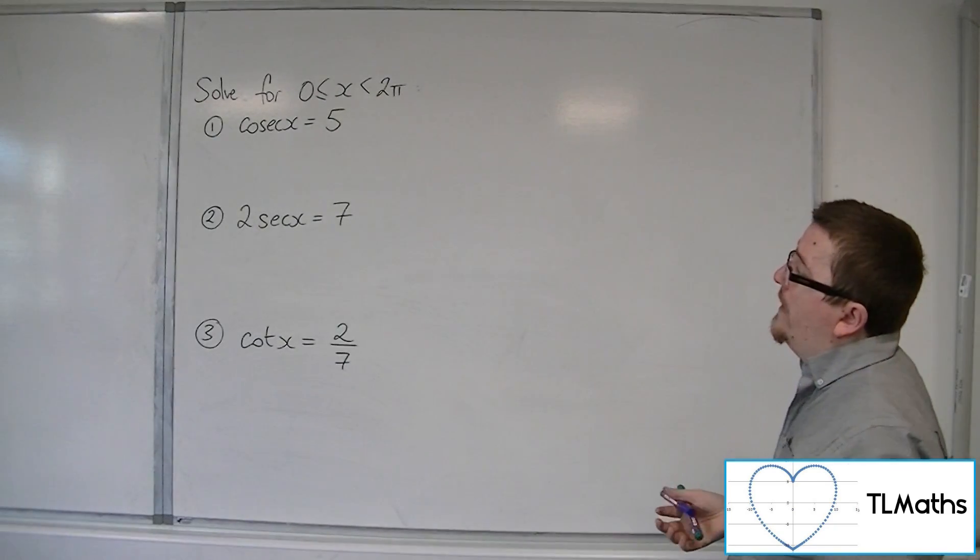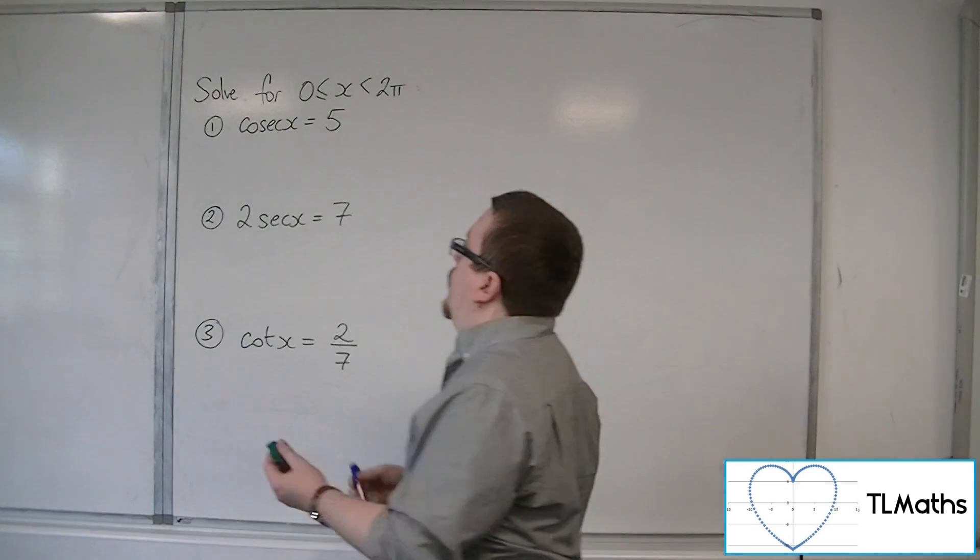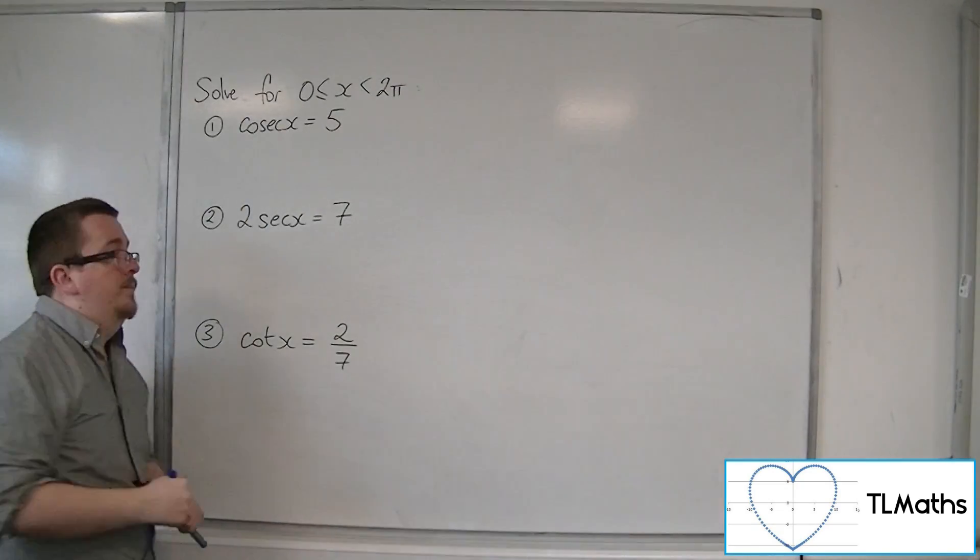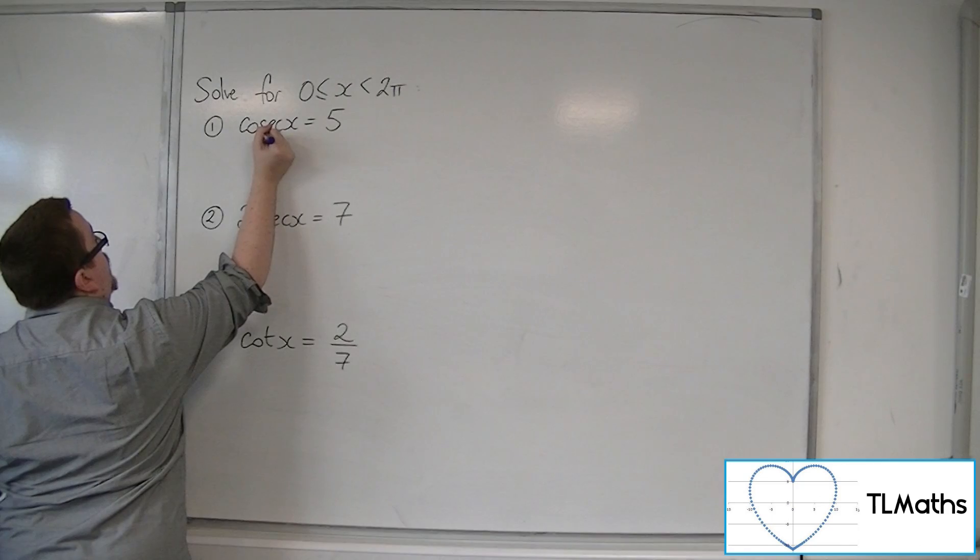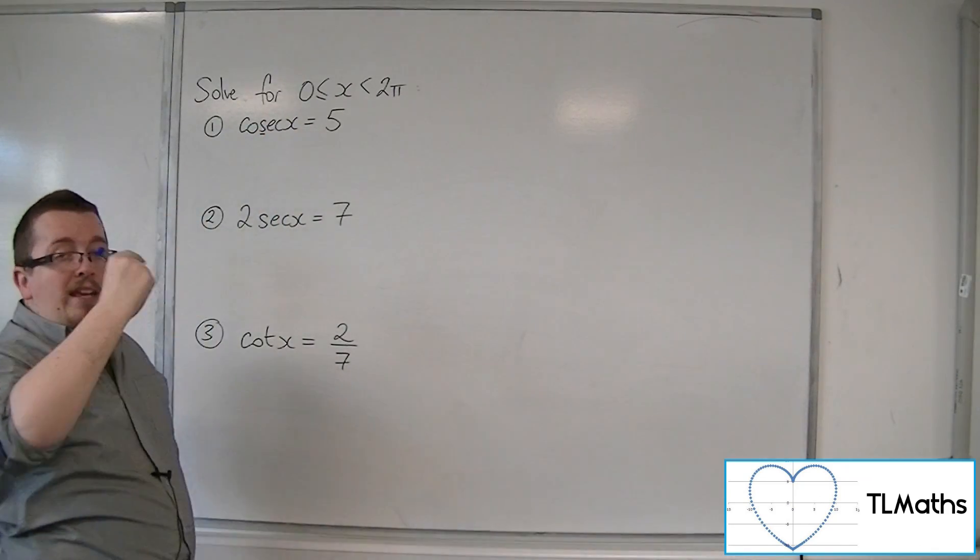So we're going to solve number 1, cosec x is equal to 5. Now cosec, remember the third letter rule, so 1, 2, 3. So cosec is 1 over sine.